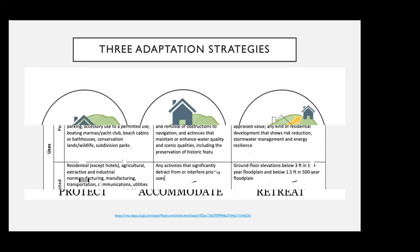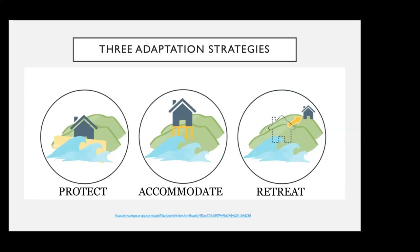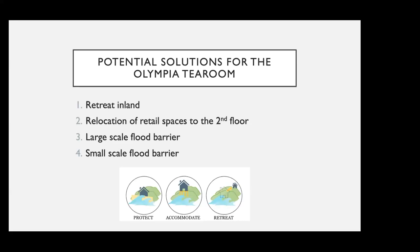The three main adaptation strategies that a coastal business could implement are protection, accommodation, and retreat. Protection would include the use of some kind of structure to protect a building from coastal hazards. Accommodation would include something like elevating the building. Retreat would be retreating inland. Therefore, potential solutions I suggest for the Olympia Tea Room are to either retreat inland, relocate retail spaces to the second floor, create a large-scale flood barrier, or create a small-scale flood barrier.